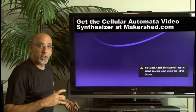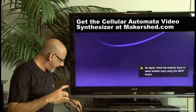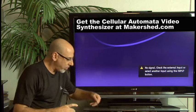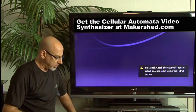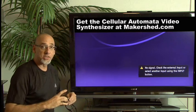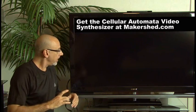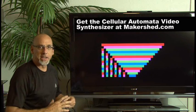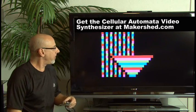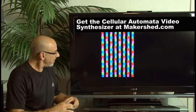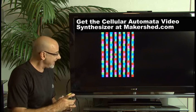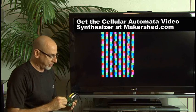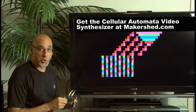Okay, we've hooked up our video cable and our audio cable, and now we're going to supply power to our cellular automata video synthesizer. And it immediately begins displaying very cool random patterns, and these can be controlled by three different potentiometers which we installed.